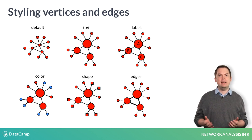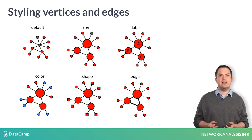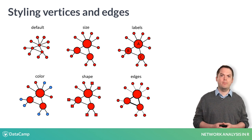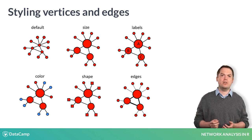Color and shape are particularly useful for communicating differences in categorical vertex attributes. For edges, in addition to altering the thickness of lines to represent edge weights, you can also change the color or line type to indicate the type of interconnectivity between vertices. These styles can be done separately or in conjunction with each other. The most important consideration is to ensure that they highlight those key pieces of information that you wish to communicate to the audience.